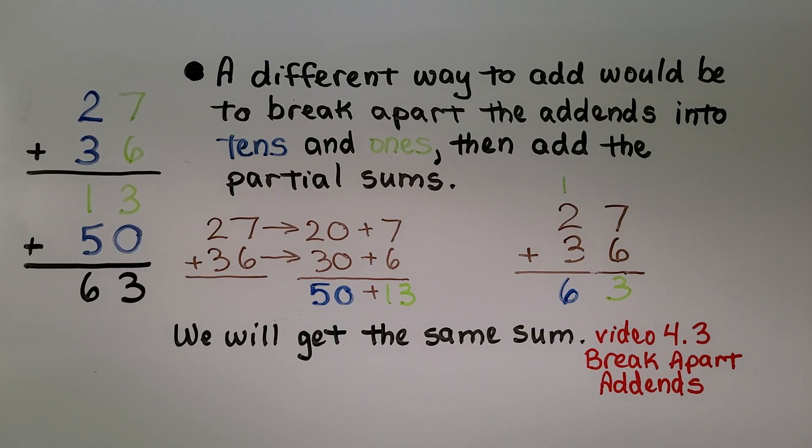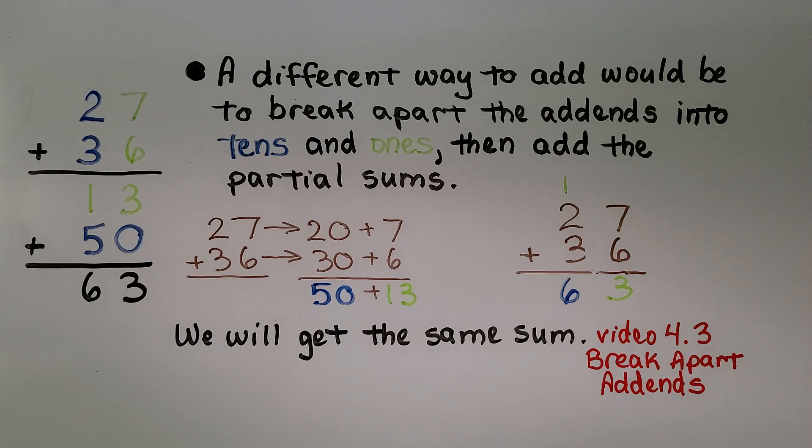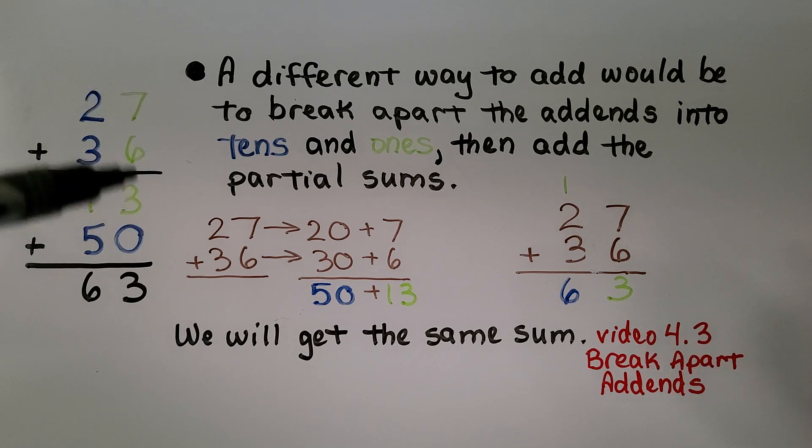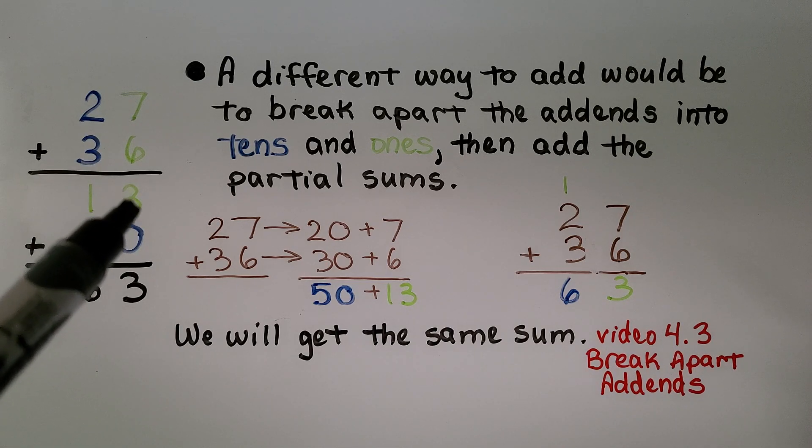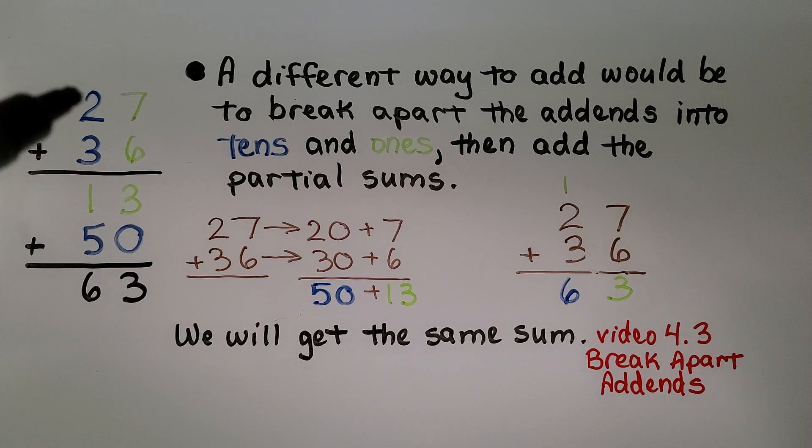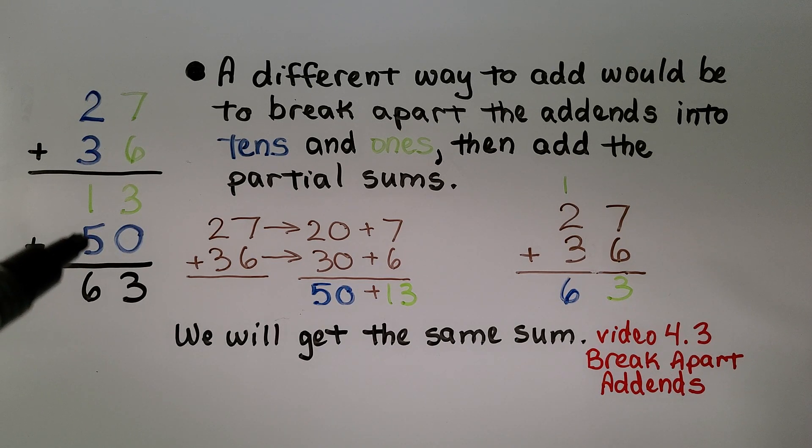A different way to add would be to break apart the addends into tens and ones, then add the partial sums. If we're adding 27 plus 36, we can add the 7 plus 6, which is equal to 13, and write the 1 10 in the tens column and the 3 ones in the ones column. Then we add 2 10s plus 3 10s, which is 5 10s. That's 50.